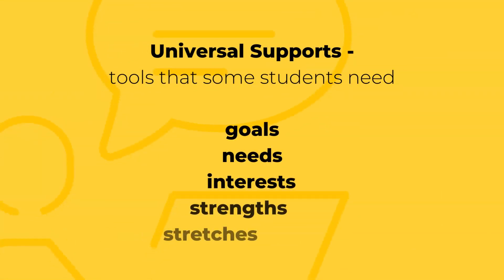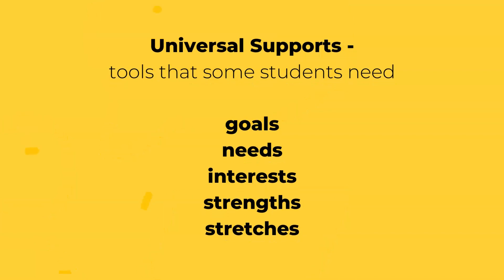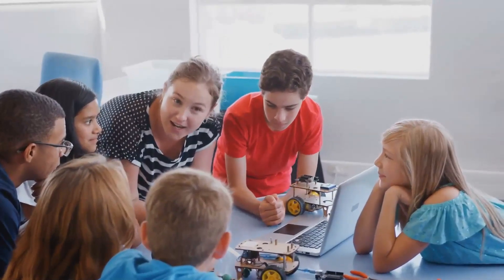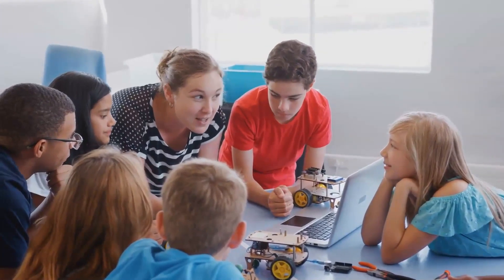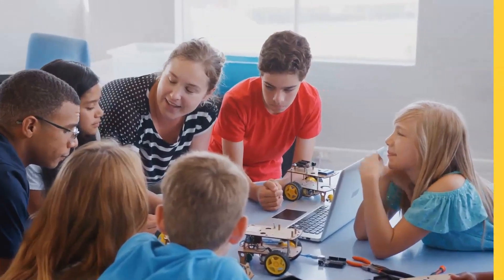Shelly Moore defines universal supports as tools that some students need based on their goals, needs, interests, strengths, and stretches — otherwise known as things we need, support with, or need to get better at. She defines universal strategies as actions that some students need based on the same categories. When we think about universal, we think about all. So how can we teach all students to use these supports or tools and strategies or actions in meaningful ways?